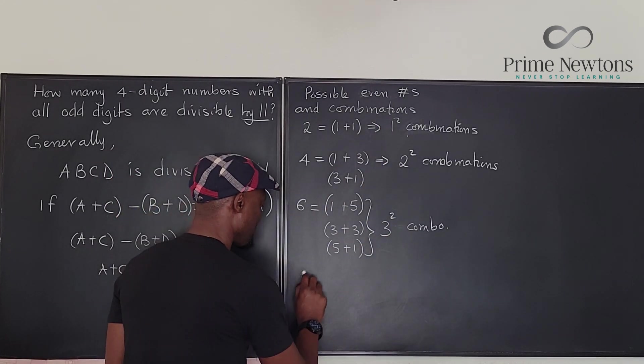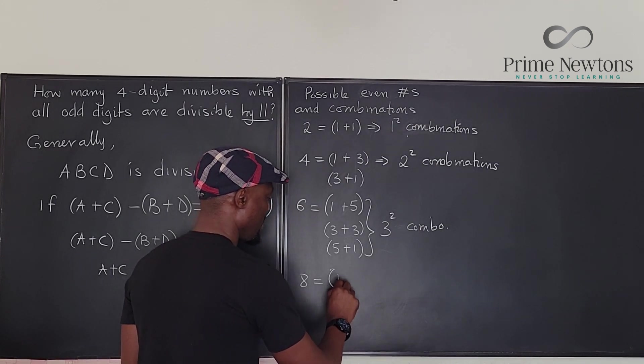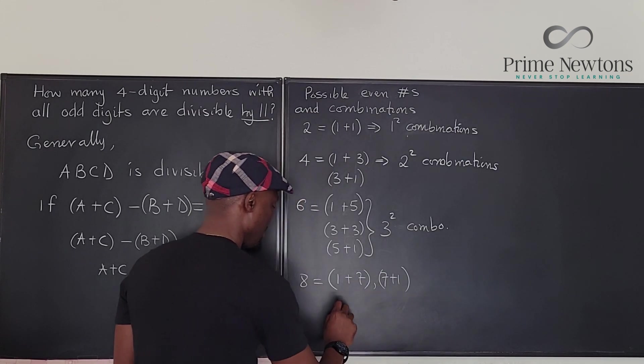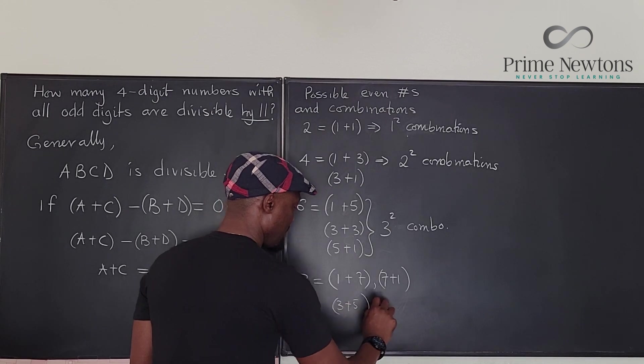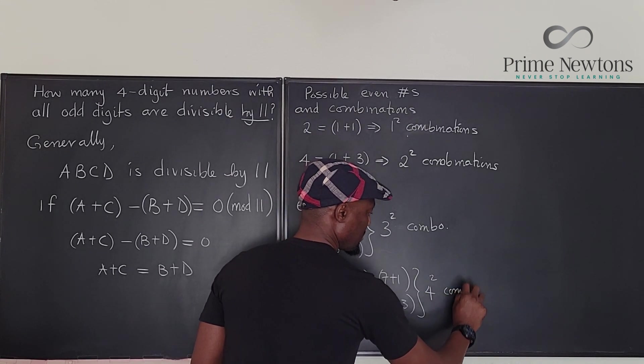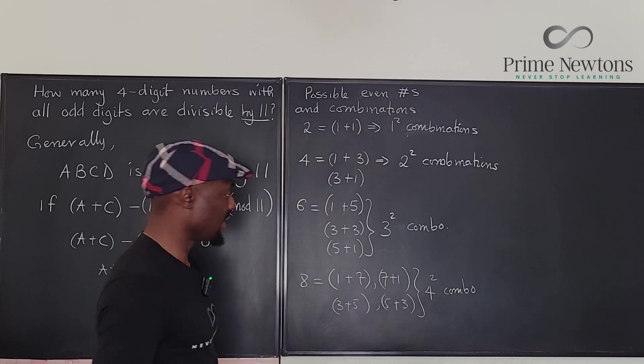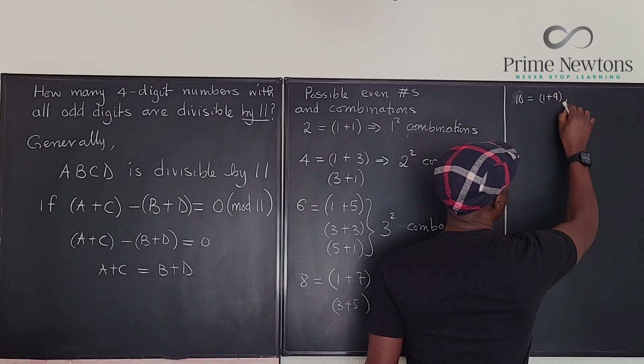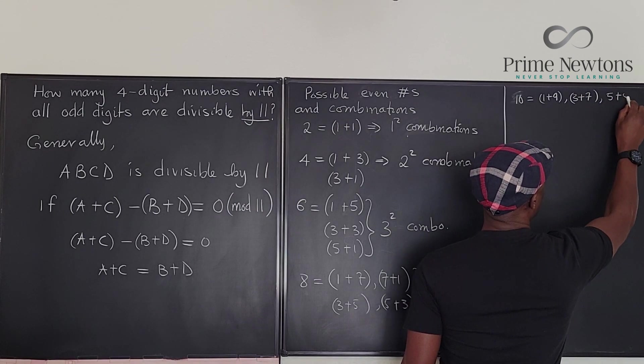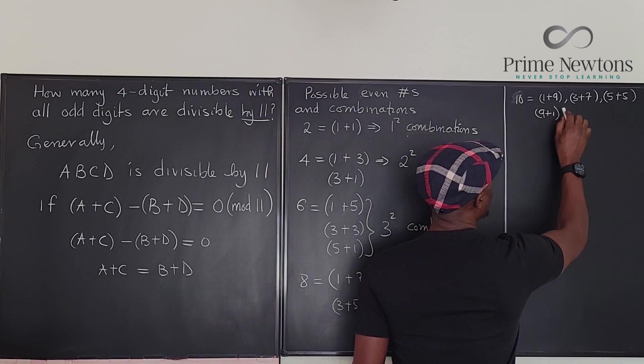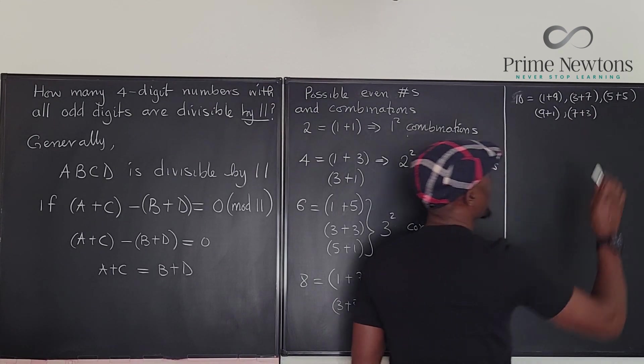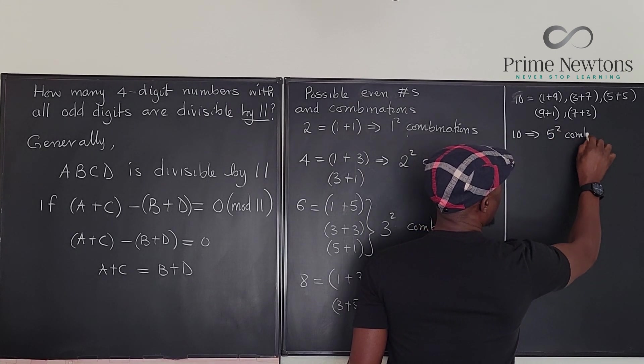Let's go to the next one. 8 is going to be, the possible options are 1+7, 7+1, 3+5, 5+3. It's 4 squared. Let's go to the next one, 10. We can do 1+9, 9+1, 3+7, 7+3, and 5+5. That's it. 5 squared combinations.